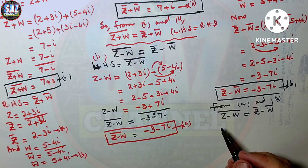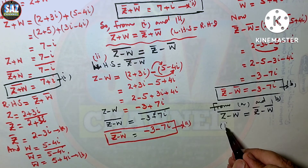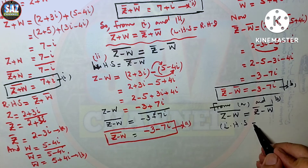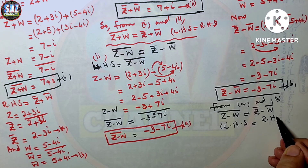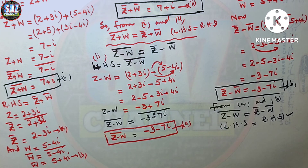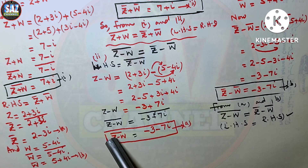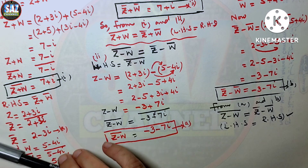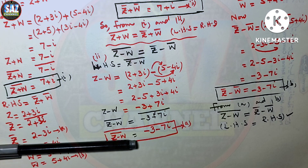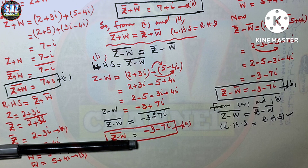Therefore Z minus W whole bar equals Z bar minus W bar, so left hand side equals right hand side. This is how you solve this question in your board examination to get full marks — otherwise the examiner has the right to deduct marks. Please watch and understand this carefully. For the third part, catch me in the next class. Thank you very much.